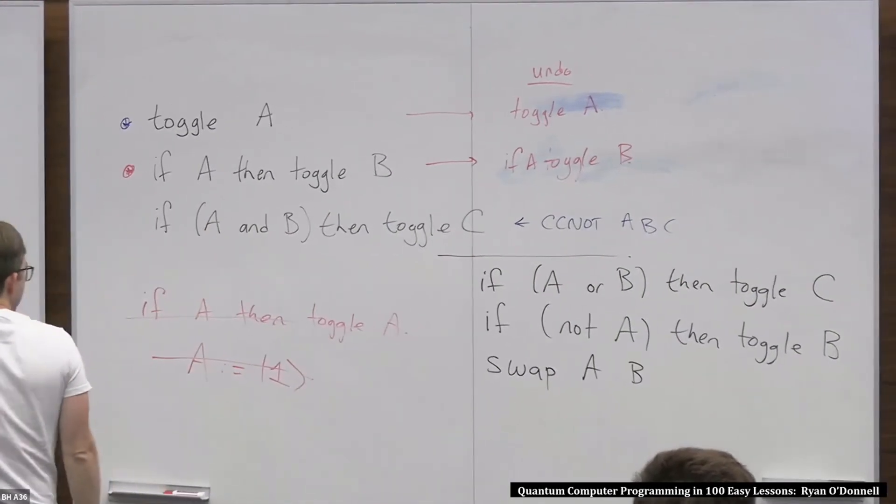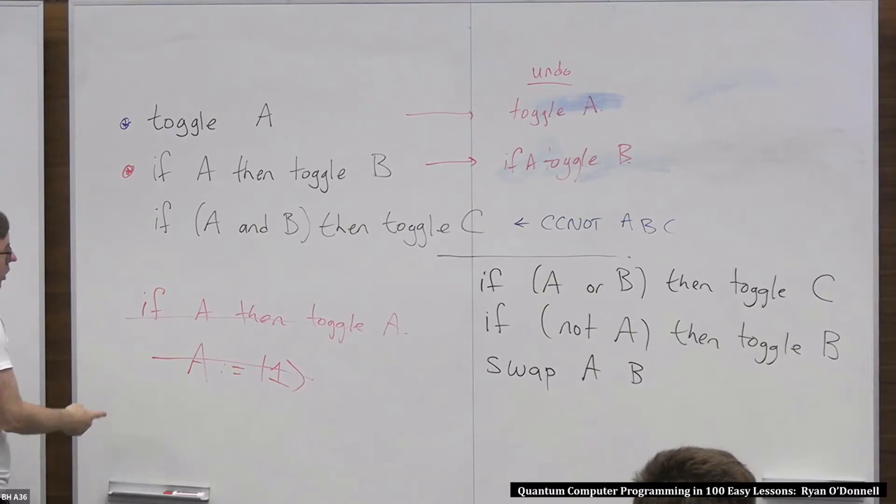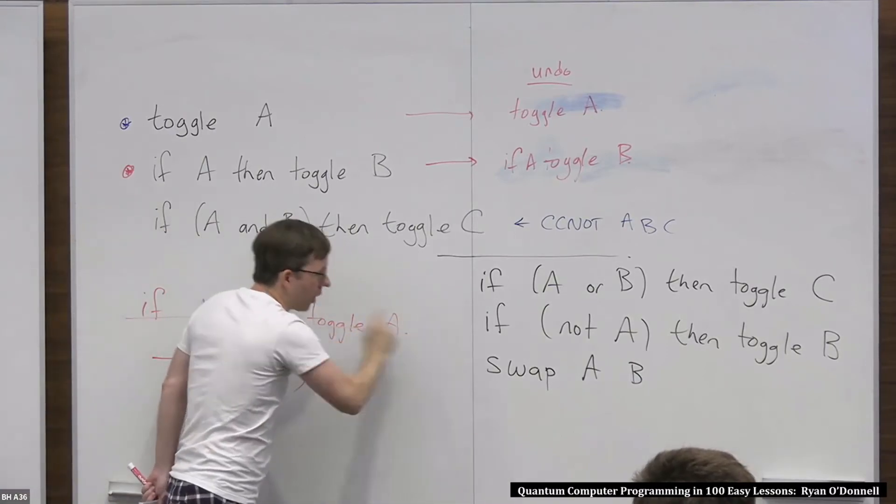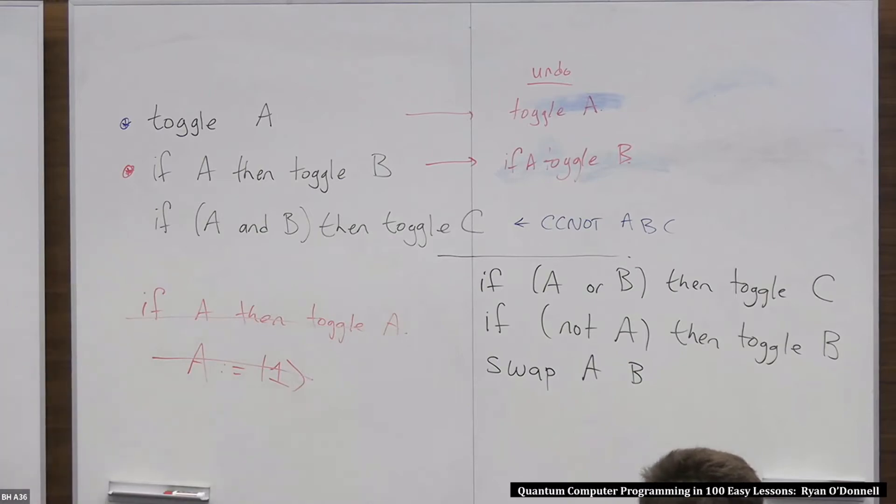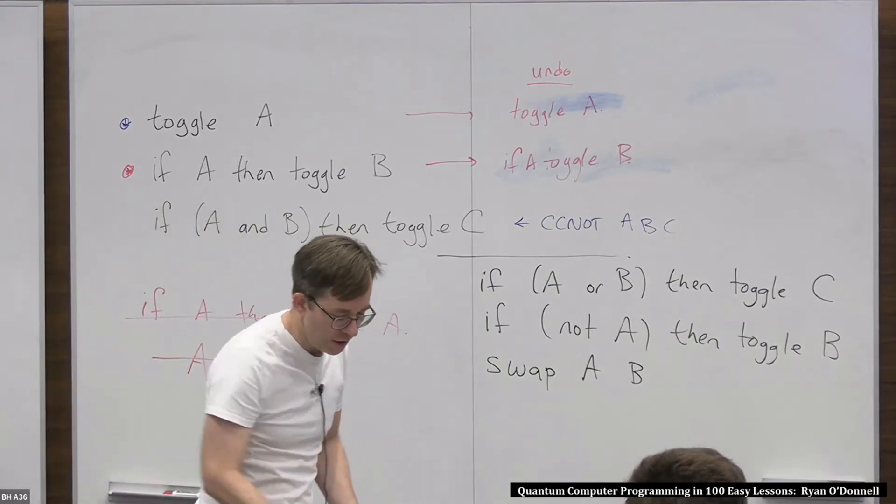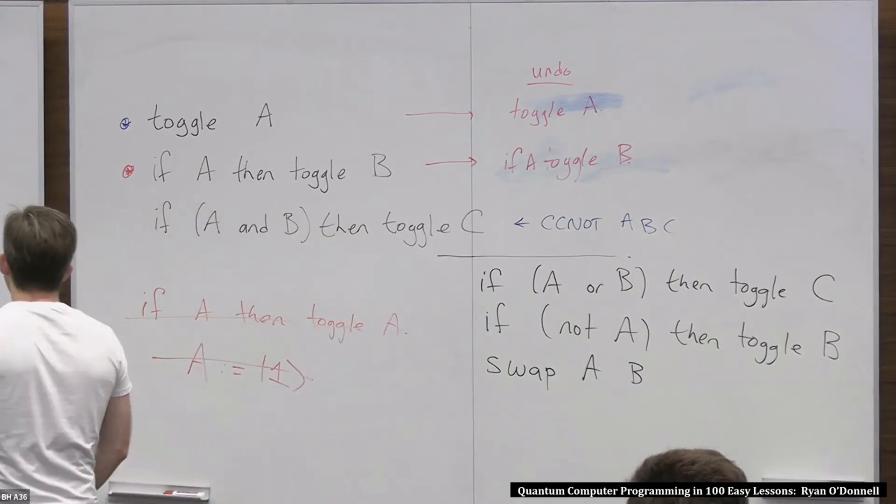Actually, for similar reasons, you can check for yourself that all six of these instructions have the property that they're their own undo. For any of these instructions, if you do them twice, then it's equivalent to doing nothing. Now, I'm here to tell you that that's actually kind of a coincidence. You shouldn't assume that that's always true. It's just somehow these are some of the simplest instructions. They happen to be their own undo, but it doesn't have to be like that.